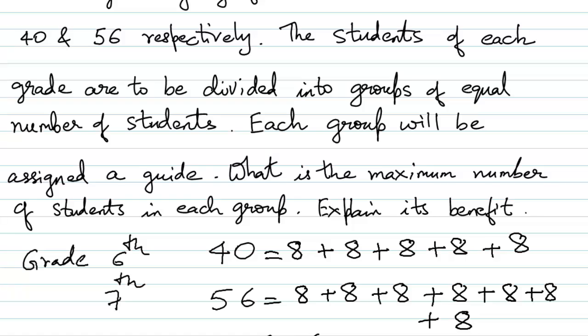We have 12 such groups, each with an equal number of students. If we had taken a smaller number than 8 — say 4 — we would have double the groups and would need to assign a guide to each, making the cost much higher. The benefit of finding the HCF is that we get equal groups with the maximum possible number of students in each, minimizing the number of guides needed. This is one of the key applications of HCF.